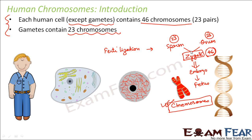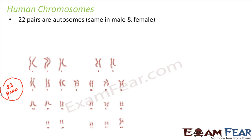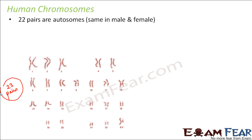So now let us see what those 46 chromosomes look like. They exist in pairs — so there are a total of 23 pairs of chromosomes inside each cell. Now out of these 23 pairs, 22 pairs are the same in male and female — whether it is a male or a female, these 22 pairs remain the same. These 22 pairs are called autosomes. So here you can see from pair number 1 to pair number 22 — they are all autosomes.